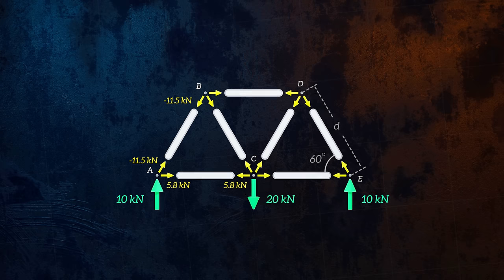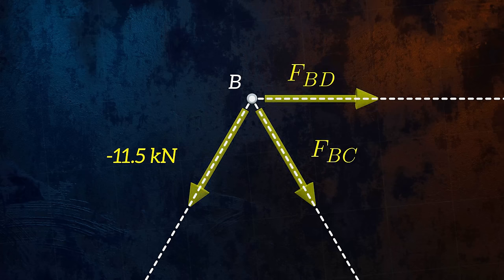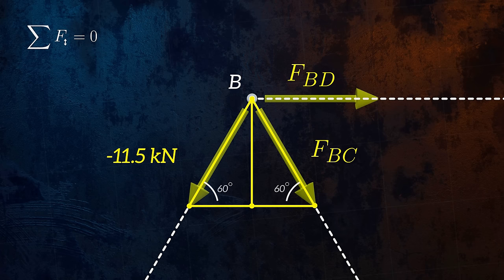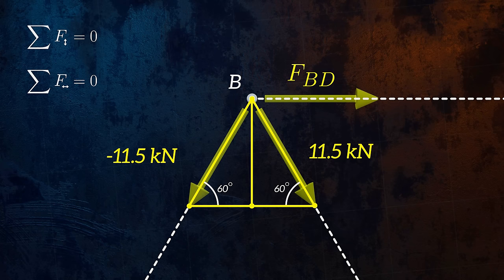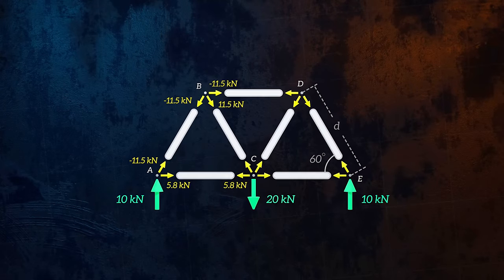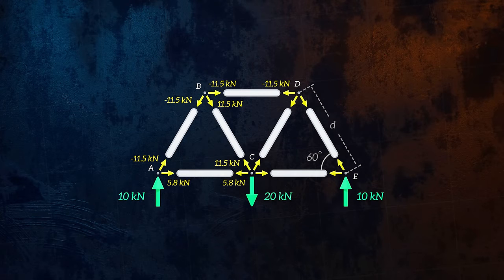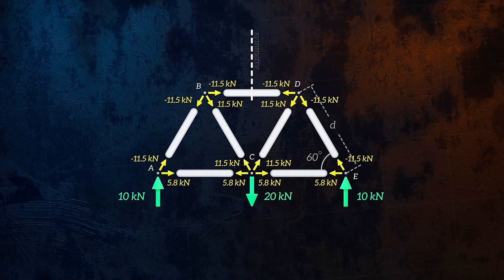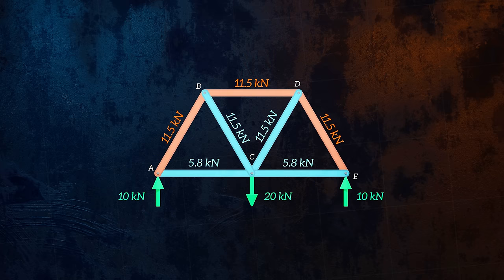We can repeat the process for joint B. We can start by considering equilibrium of the vertical forces, which allows us to calculate the force FBC. And then we can consider equilibrium of the horizontal forces. We then need to work through all of the remaining joints. But we can save a bit of time by noticing that the truss and the applied loads have an axis of symmetry, and so the forces on the other side of the truss must be identical. That gives us all of the forces at the joints. We can show which members are in tension and which are in compression.